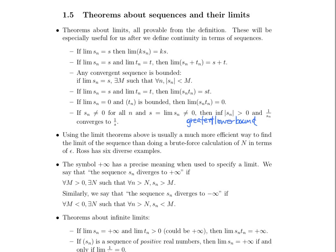Using limit theorems is a really effective way to figure out and prove all of these theorems pretty straightforwardly. In the past, you've just memorized them from a calculus book without really discussing convergence seriously or why they work. Several seem intuitive, but it's important to understand the analysis behind it. The limit theorems are a much more efficient way to find the limit of a sequence than doing a brute-force calculation of what the index should be for some given value of epsilon. Ross has some great examples.